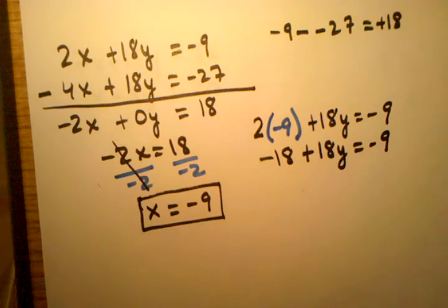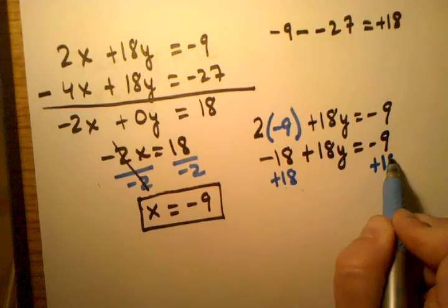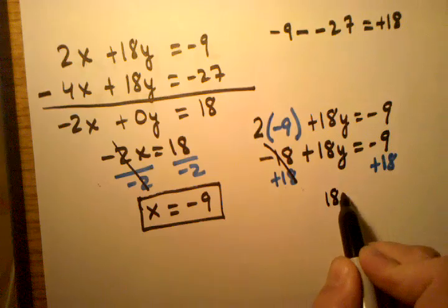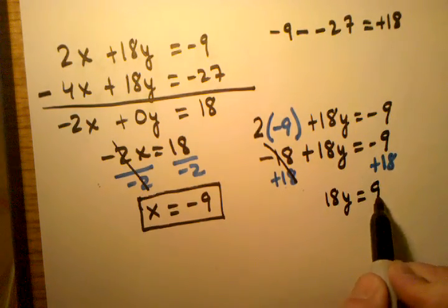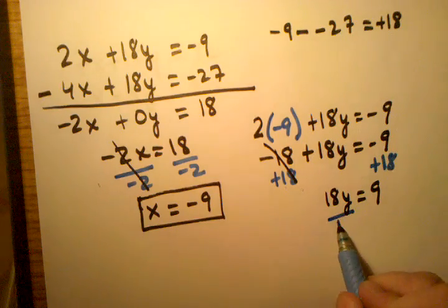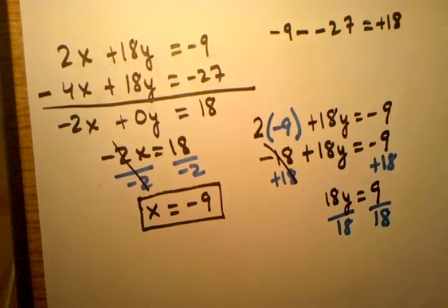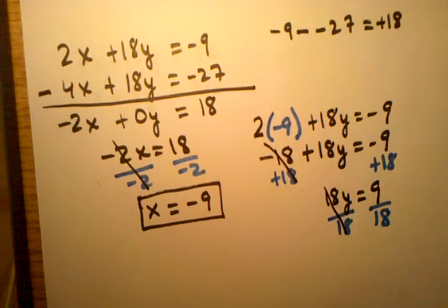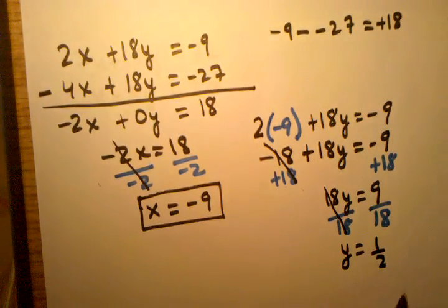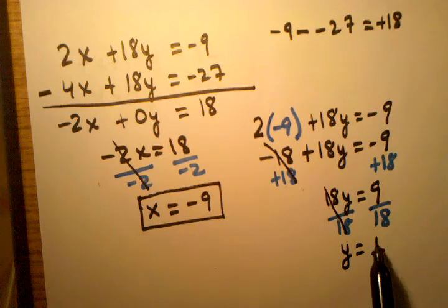Now I'm going to add 18 to both sides, and that will eliminate this one. That will give me 18y equals 9. And then I will end up with, oh, I have to divide by 18 on both sides, which will cancel those two out. And then I will end up with y equals 1 half. If I simplify 9 over 18, I'll get 1 half.